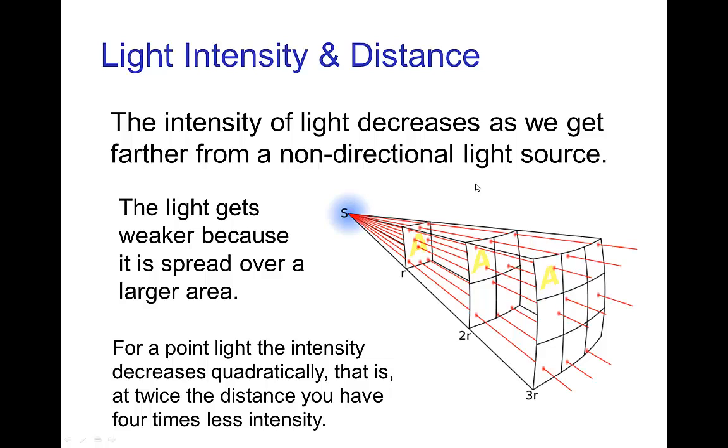The illumination on a surface is weakened because the light rays from a point light source are spreading over a larger area. So for a point light, that spread is quadratic.